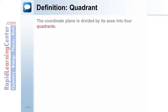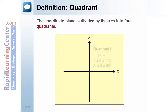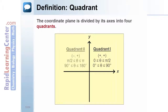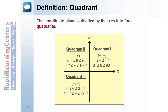Definition — Quadrant: The coordinate plane is divided by its axes into four quadrants. The first quadrant occupies the upper right corner; both x and y coordinates are positive, and the standard angle is between 0 and 90 degrees. The second quadrant occupies the upper left corner; x is negative, y is positive, and the angle is between 90 and 180 degrees. The third quadrant occupies the lower left corner; both coordinates are negative, and the angle is between 180 and 270 degrees. The fourth quadrant occupies the lower right corner; x is positive, y is negative, and the angle is between 270 and 360 degrees.